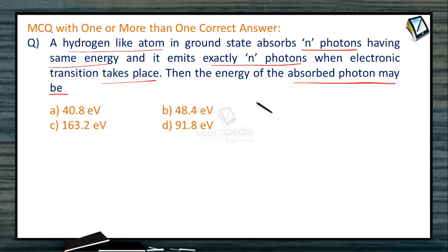It is a hydrogen-like species with electron in ground state absorbing n photons. Since the same number of photons are absorbed and emitted, this is only possible when the electron gets excited from n1=1 to n2=2.